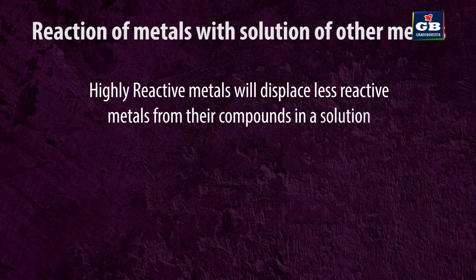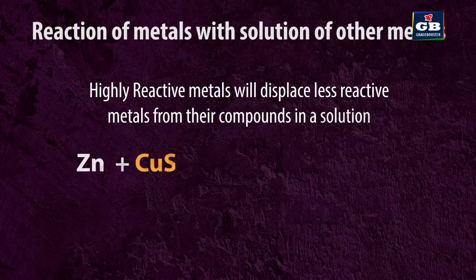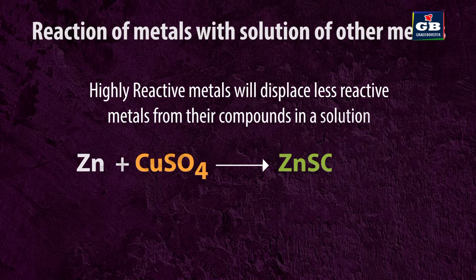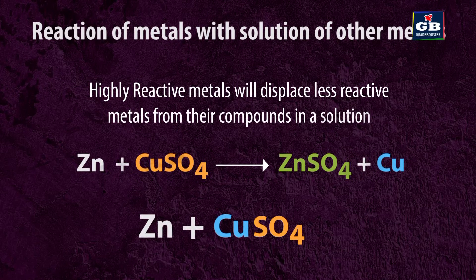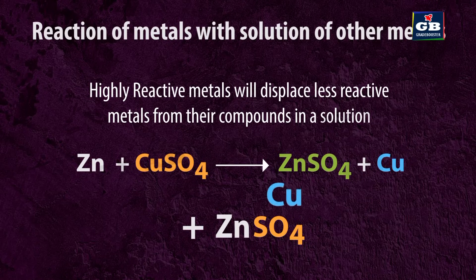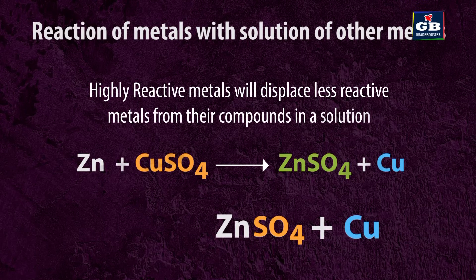Reaction of metals with solutions of other metal salts: Highly reactive metals will displace less reactive metals from their compounds in solution. For example, zinc reacts with copper sulfate solution and forms zinc sulfate and copper metal. Here, zinc is more reactive than copper as it is higher in the reactivity series.